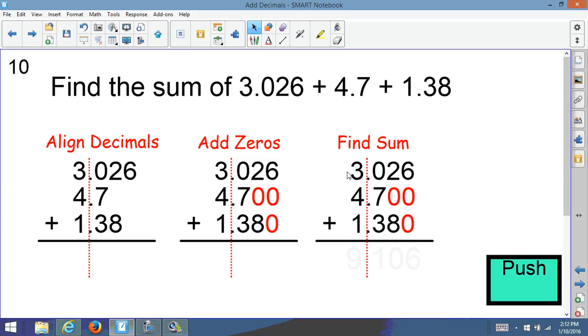1 plus 0 plus 7 is 8 plus 3 is 11. Carry the 1. And 3 plus 4 is 7, plus 1 is 8. And don't forget the one I carried. That'll give me 9. So I'll get 9.106. So there's my number.